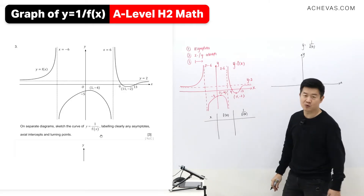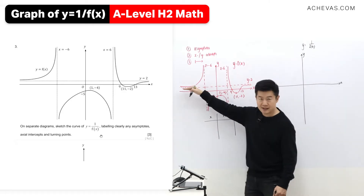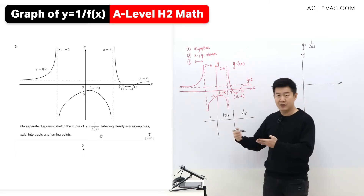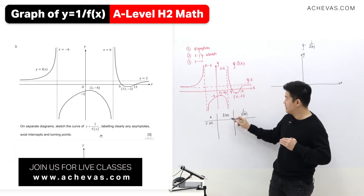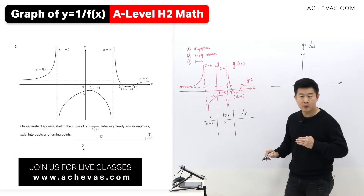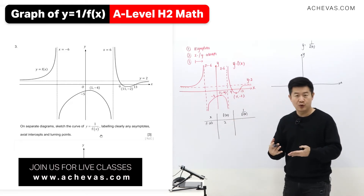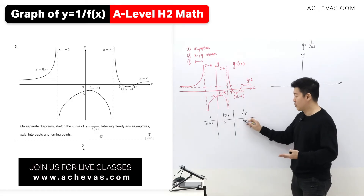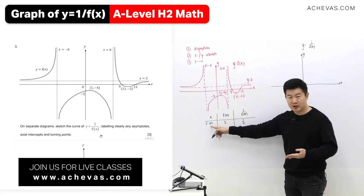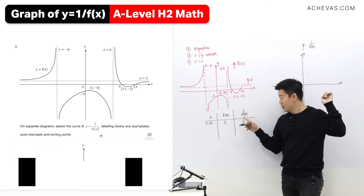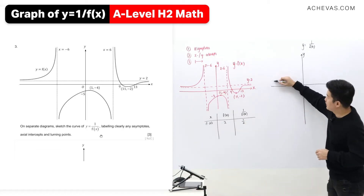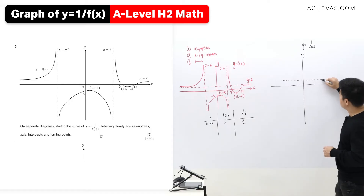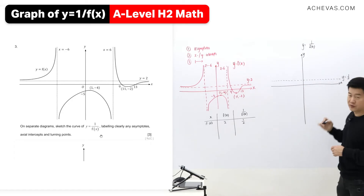Just make sure that we go through all the asymptotes. For the horizontal asymptote, it is the behavior of y when x tends to plus or minus infinity. When x tends to plus or minus infinity, I can see that y tends to 2, which means f(x) tends to 2. So 1 over f(x) is 1 over 2. On this graph, y tends to 1 over 2, meaning I'll be expecting a horizontal asymptote y equals 1 over 2.